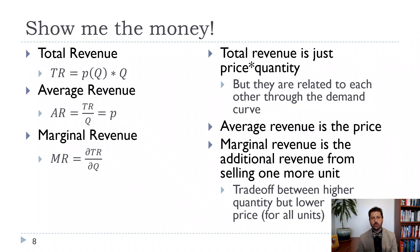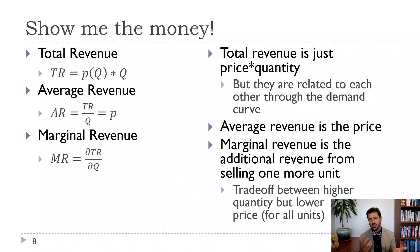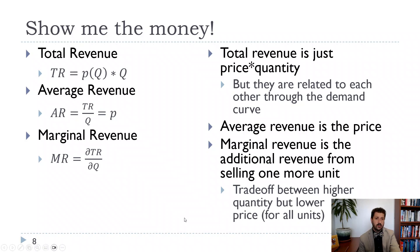Marginal revenue is going to be really important — it's not always positive because firms face a downward sloping demand curve. Whenever they increase price, quantity goes down, and whenever they reduce price, quantity goes up. For some parts, eta will be positive and revenue will increase as price goes up. But then eta turns less than one, and as you increase price quantity goes down even more, and eventually your price is so high you can't sell anything.